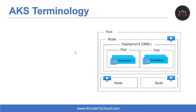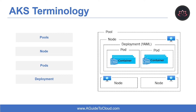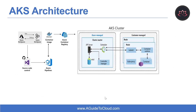Let's learn some AKS terminologies. Pools are a group of nodes with identical configuration. Nodes are individual virtual machines running containerized applications. Pods are single instances of an application, and a pod can contain multiple containers. Deployment means one or more identical pods managed by Kubernetes. And finally, a manifest is a YAML file describing a deployment.